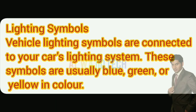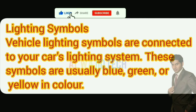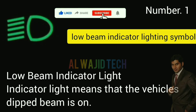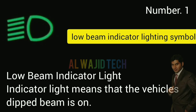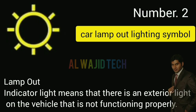Vehicle lighting symbols are connected to your car's lighting system. These symbols are usually blue, green, or yellow in color. Number one: Low beam indicator — the low beam indicator light means the vehicle's dipped beam is on. Number two: Car lamp out indicator means that there is an exterior light on the vehicle that is not functioning properly.